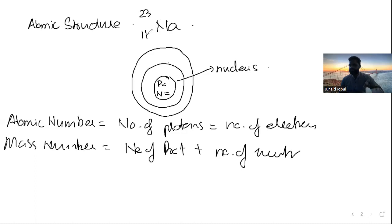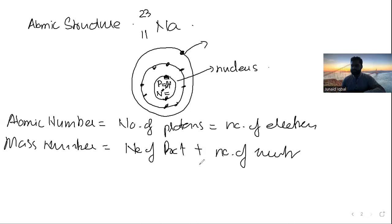So sodium has atomic number 11, meaning the number of protons and electrons are both 11. Electrons are arranged as 2 in the first shell — that's the maximum — then 8 in the second shell, making 10 total, with 1 remaining in the outer shell. That outer electron has the weakest force between the nucleus and the electron, so it can move anywhere, help in reactions, and create different reactions. Number of protons: 11. Number of electrons: 11. Number of neutrons: mass number minus number of protons = 23 minus 11 = 12. So number of neutrons is 12.